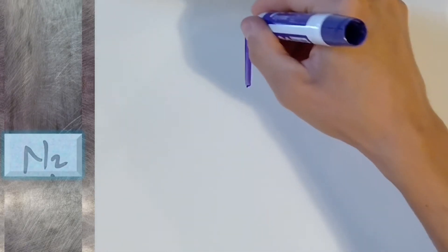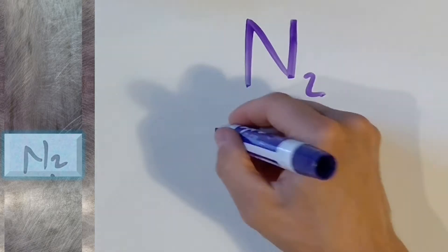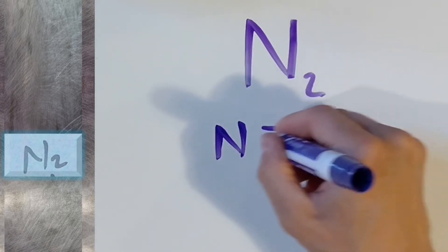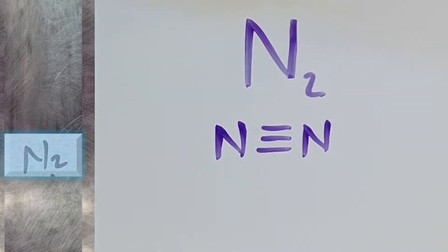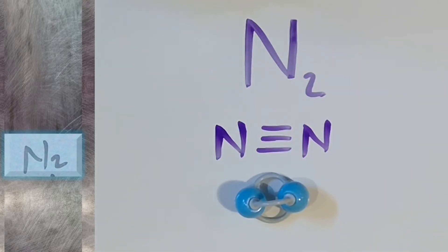Now let's consider nitrogen gas. Like oxygen, the formula for nitrogen gas contains two of the same atom — two nitrogens bonded together. Here is its molecular structure. Here we see another example in which there are multiple bonds between a pair of atoms. This is called a triple bond because there are three bonds between the atoms. It would be said that each nitrogen is bonded three times.